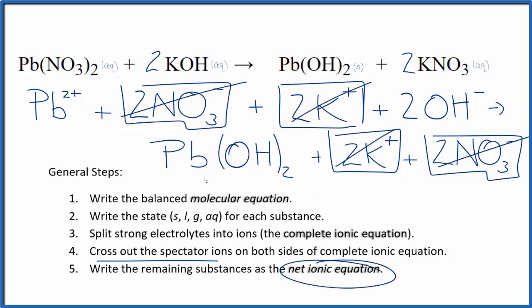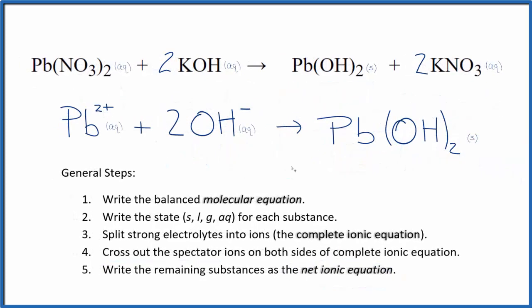But what's left, that's the net ionic equation for Pb(NO3)2 plus KOH. I'll clean this up and write the states. We'll have our net ionic equation. So this is the balanced net ionic equation for lead(II) nitrate plus potassium hydroxide.